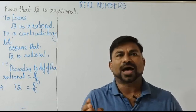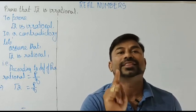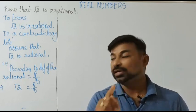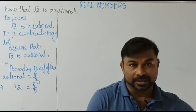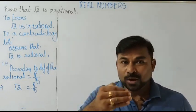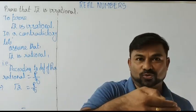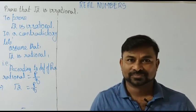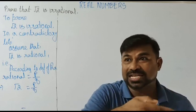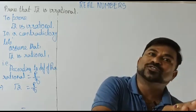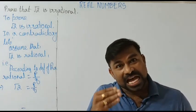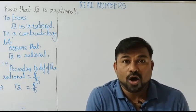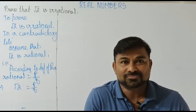In this concept I am going to take the contradictory method to prove that root 2 is irrational. What is the meaning of a contradictory method? Simple — the one what we are supposed to prove, you take the opposite of that one.